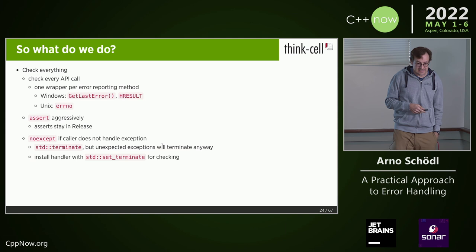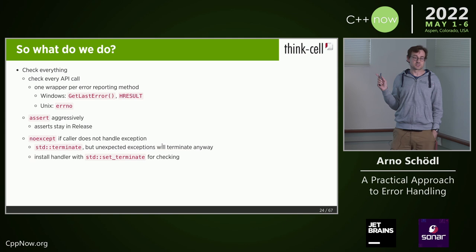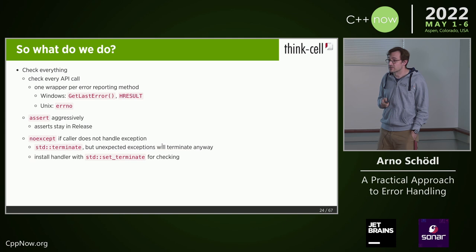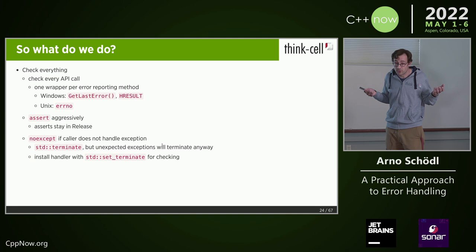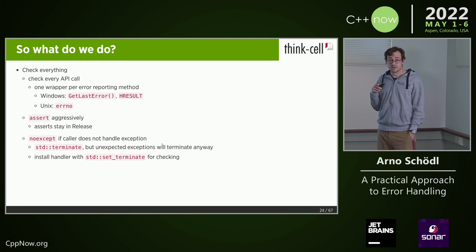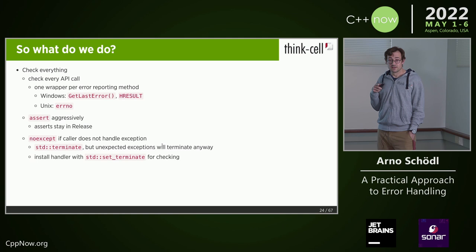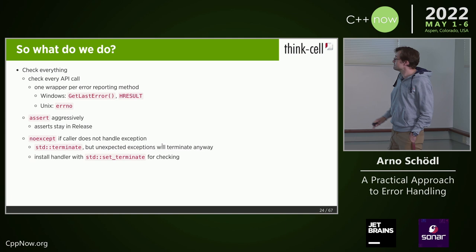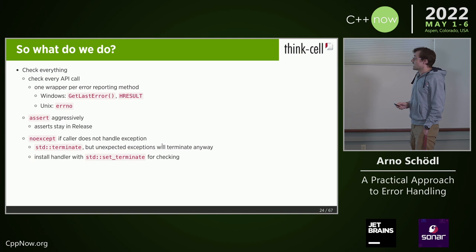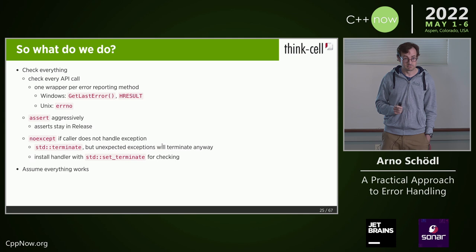We also write all functions which are not supposed to throw exceptions as noexcept. That means they will terminate the program when they actually encounter an exception. But an unexpected exception is not expected and it's probably going to terminate the program anyway, so we just say: let's terminate right here. We install a handler so that when you get this termination we know about it — we get some sort of diagnostics. And then, what do we do when something goes wrong? Nothing. We just assume that everything works.